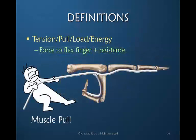Now the terms tension, pull, load, or energy all describe the force that it takes to pull through that tendon to flex the finger. And it is the force not just to flex the finger but to flex it against any resistance that's present. And as we'll see, that can be either internal or external resistance.